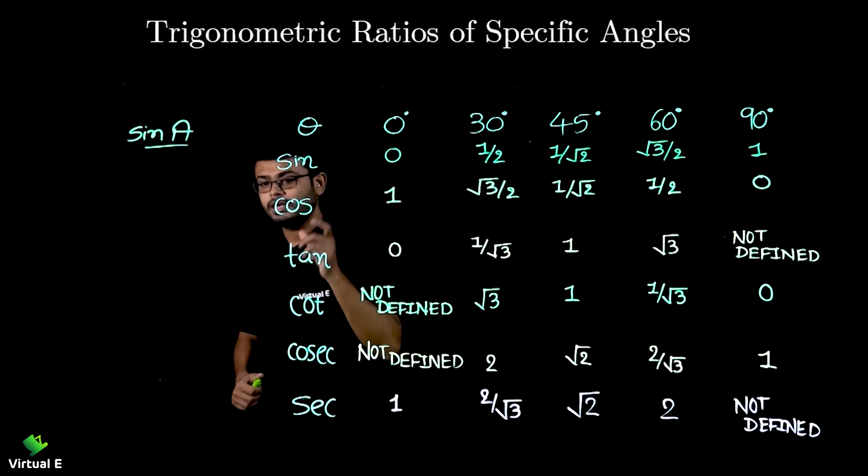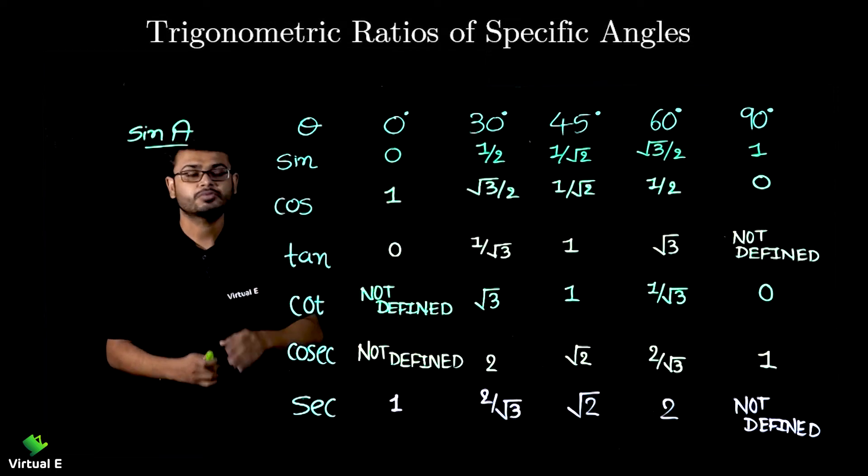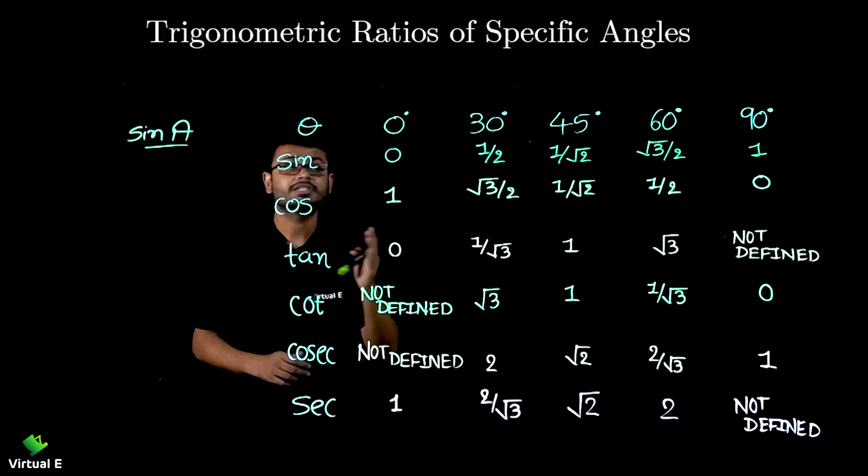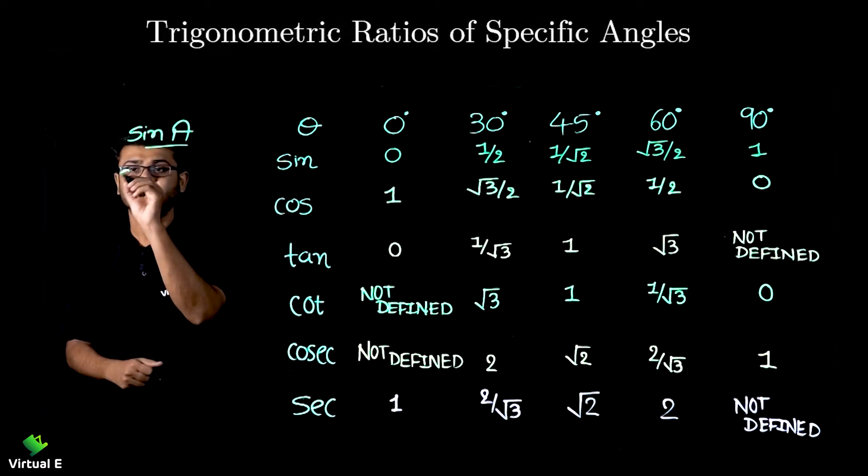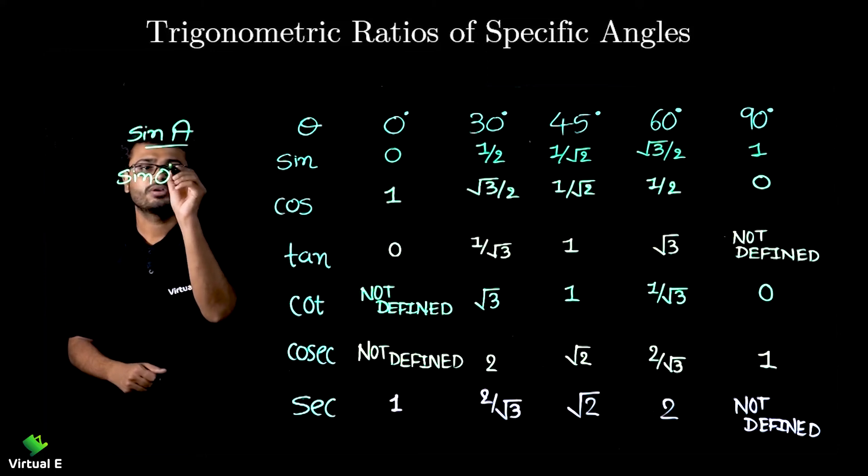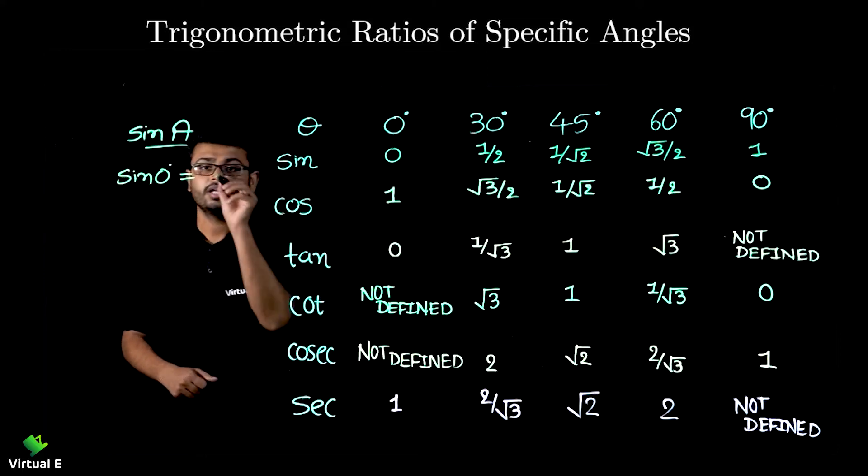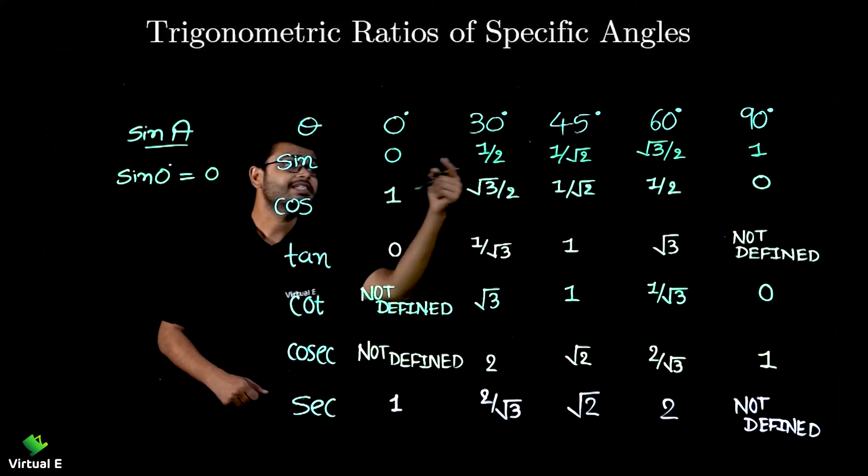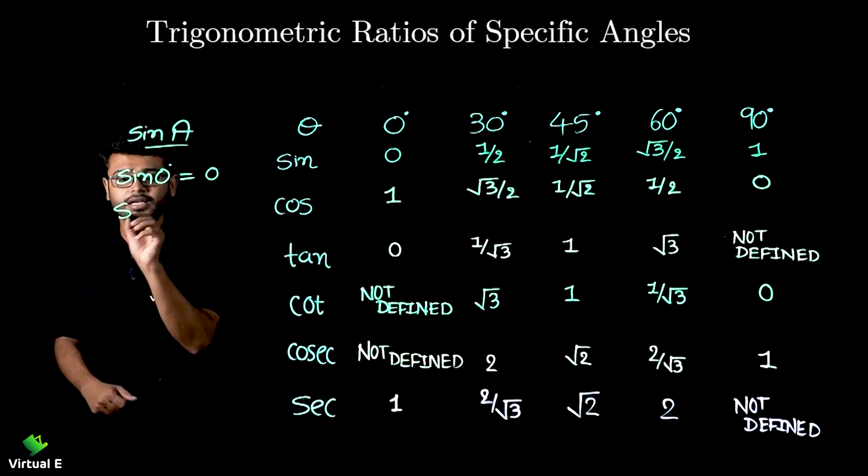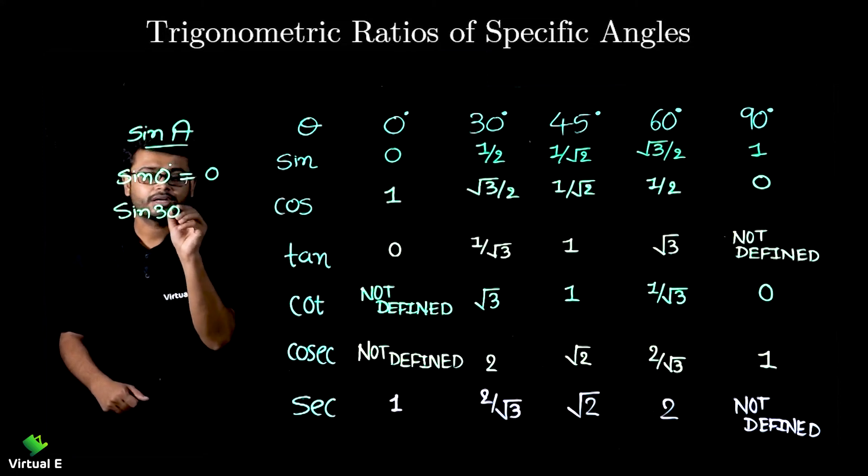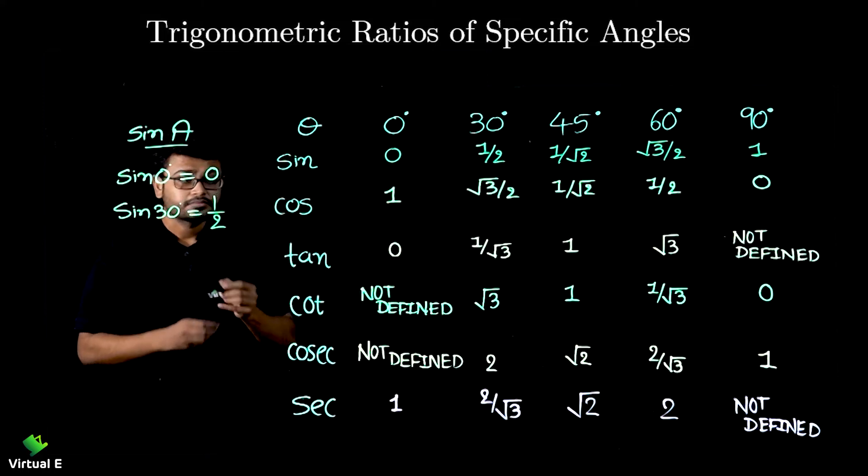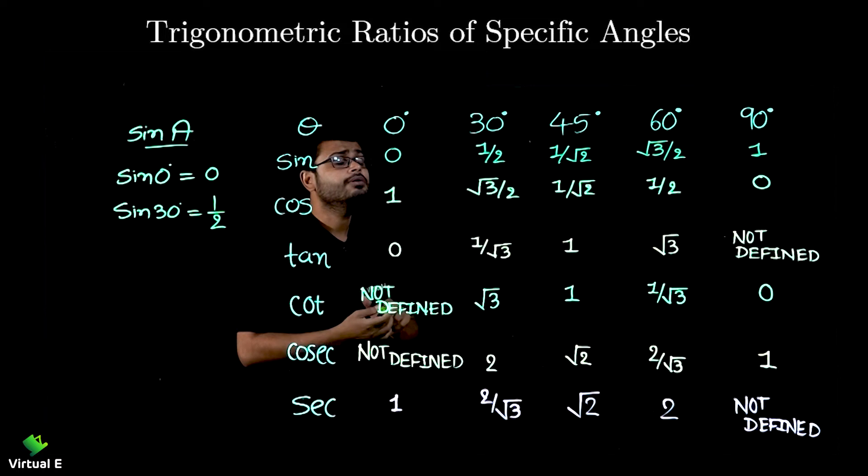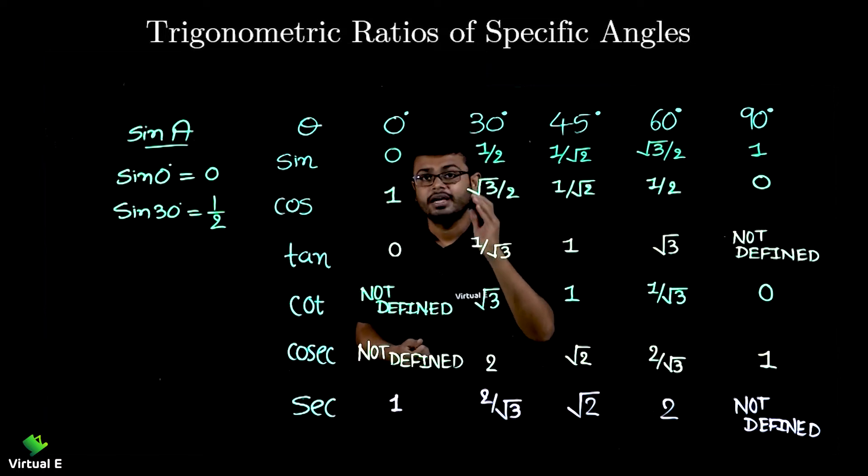First of all, let's start how to understand this table. Sine 0 degree, what is the value? It will be 0. If I say sine 30 degree, what is the value? 1 by 2. So if the value of angle is 30 degree and if I take ratio sine, what will be the answer? 1 by 2.